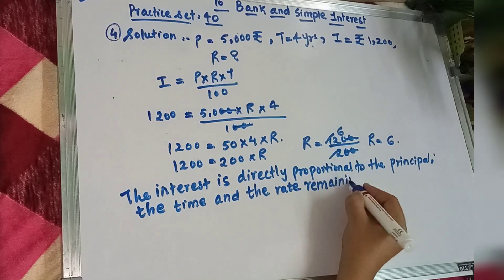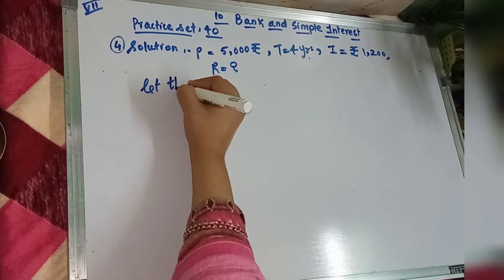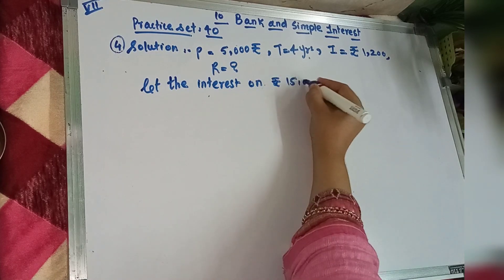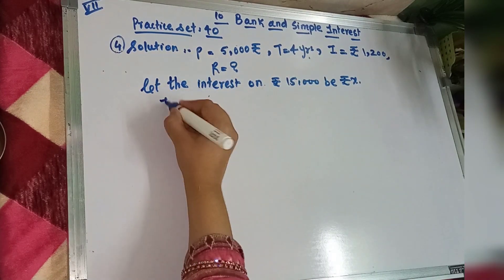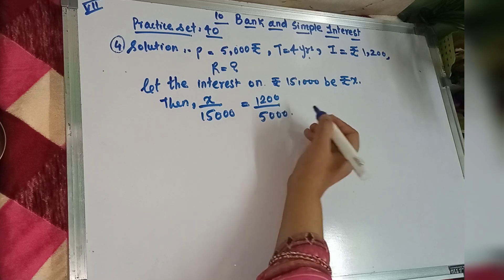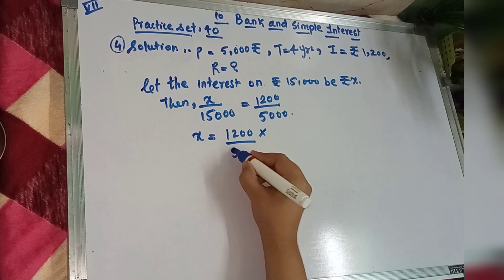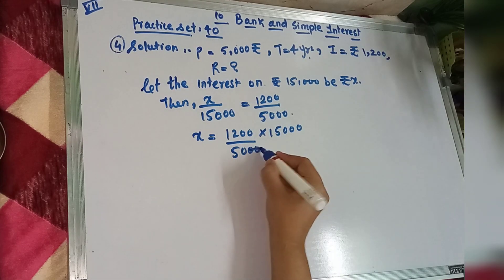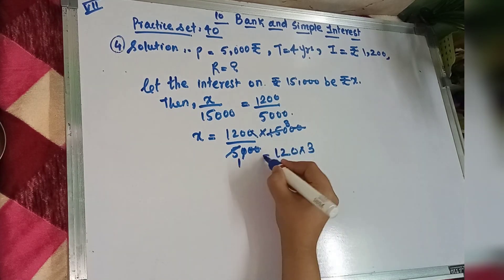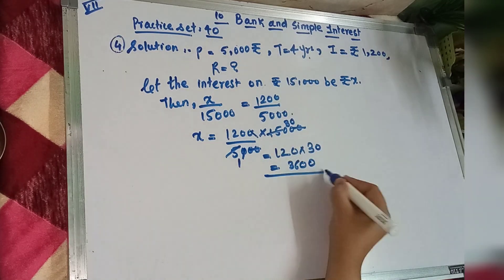The interest is directly proportional to the principal, the time and the rate remaining constant. So we have to let the interest on Rs. 15,000 be Rs. X. We write X by 15,000 is equal to 1,200 or 5,000 which is our principal. We will multiply 15,000 by both sides, so your answer is 3,600. So 15,000 ka interest aayega aapka 3,600.